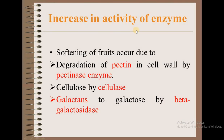Next is increase in activity of enzymes. Softening of fruits occurs due to degradation of pectin in the cell wall by pectinase enzyme, degradation of cellulose by cellulase, and degradation of galactans to galactose by beta-galactosidase. These degradation steps lead to the softening of fruits.